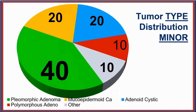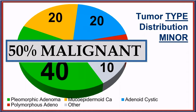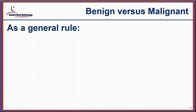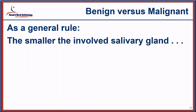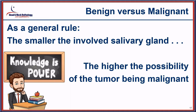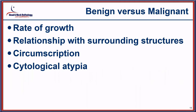In the minor salivary glands, pleomorphic adenoma is still the single majority diagnosis. However, 50% of diagnoses in minor salivary gland locations are going to be malignant. As a general rule, the smaller the involved salivary gland, the much higher the possibility of malignancy. When thinking about benign versus malignant, things like rate of growth, relationship to surrounding structures, circumscription, and atypia are often quite significant.